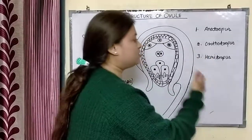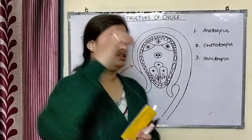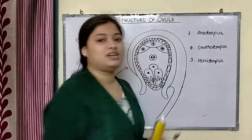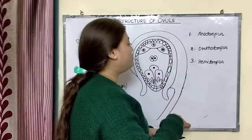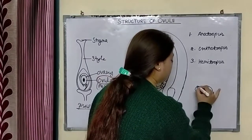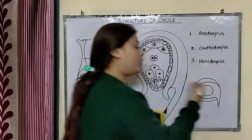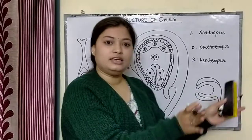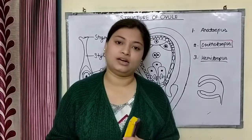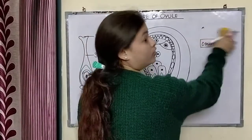Anatropos ovule has an opening from the lower side, as you can see here. The second type is Orthotropos ovule, which has an opening from the lower side in a straight orientation. The third type is Hemitropos ovule — this means that the ovule is pointing horizontally, either left or right. Don't forget these three types.